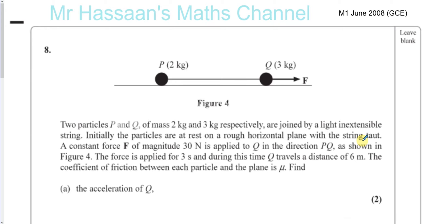Here we have two particles, P and Q, of mass 2 kg and 3 kg respectively, joined by a light and inextensible string. Initially, the particles are at rest on a rough horizontal plane. Rough means there's friction involved, with the string taut.